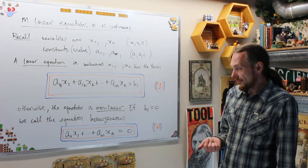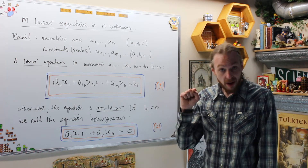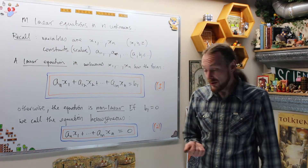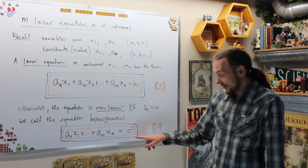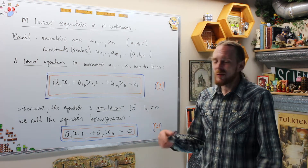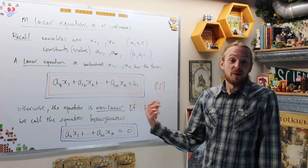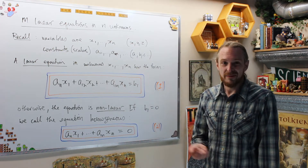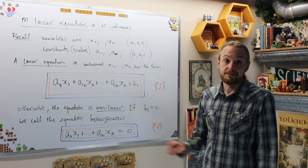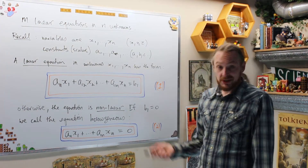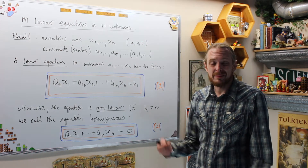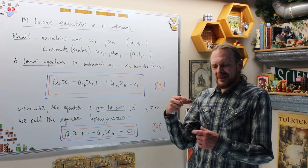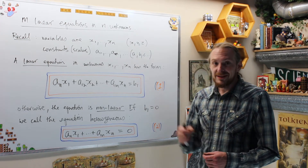Homogeneous means the right-hand side is zero. If b1 is zero, we call the equation homogeneous. The strategy is often to solve the homogeneous solution and then use that to find a clever way to solve the non-homogeneous scenario. When we have a system of M equations, the solution has to solve them all simultaneously — that's the subtle difference.